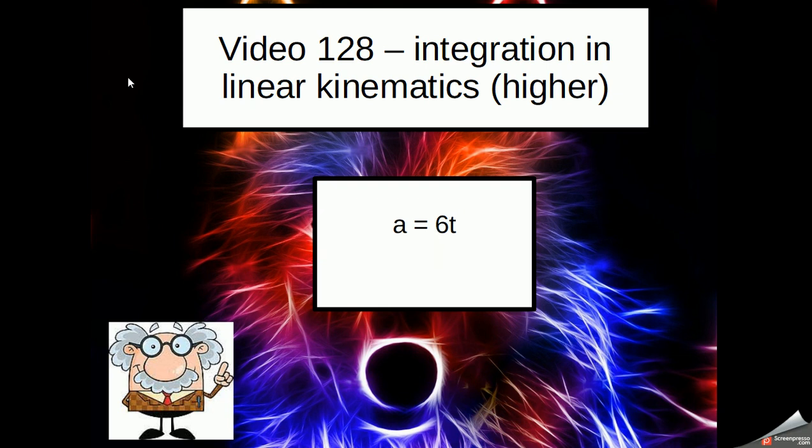So 6t to the 1 divided by 1 is 6t to the 1, and t to the 1 is just written simply as t. So from that, we've got 6t.